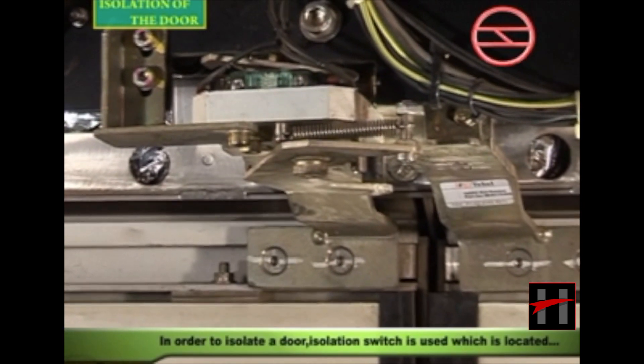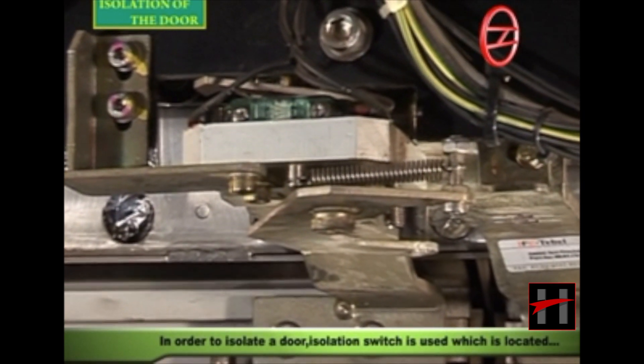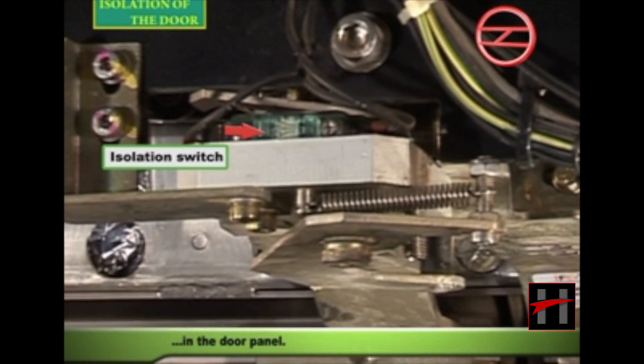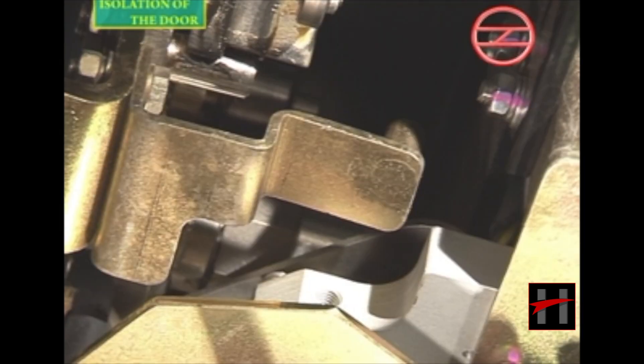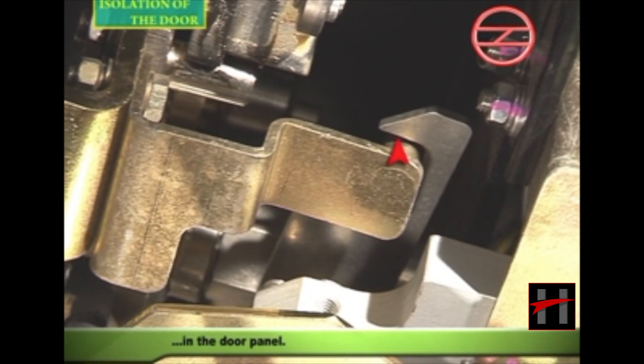In order to isolate a door, an isolation switch is used which is located in the door panel. The door can be isolated electrically and locked mechanically.